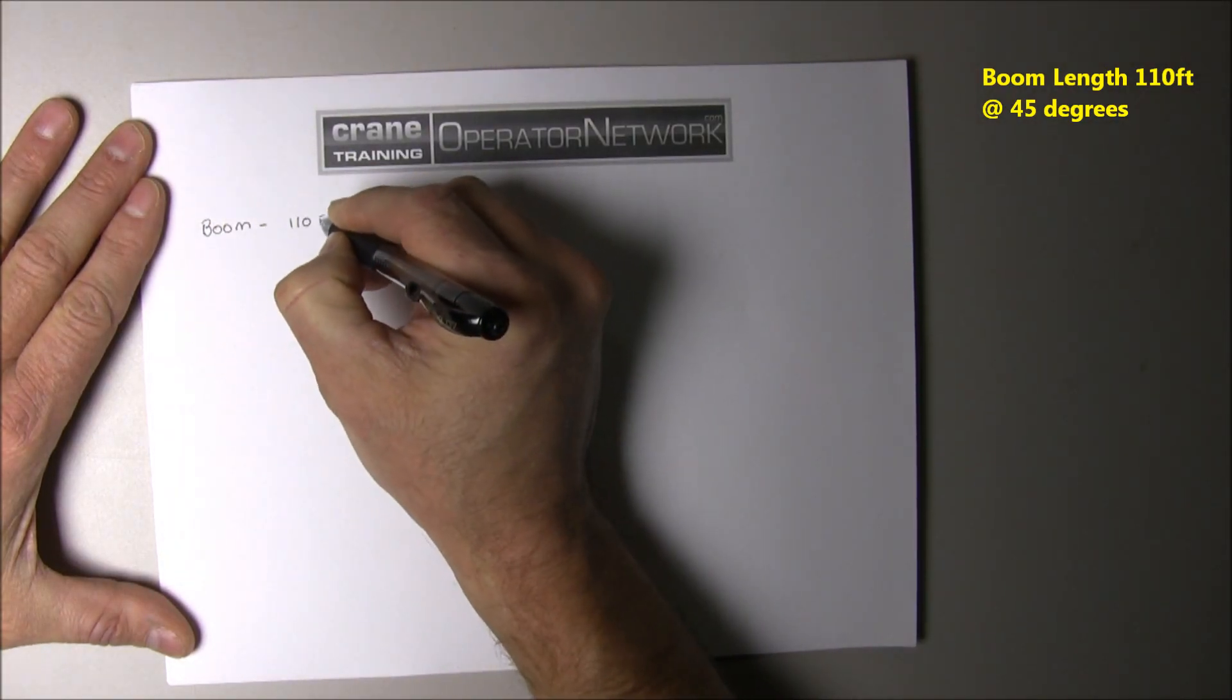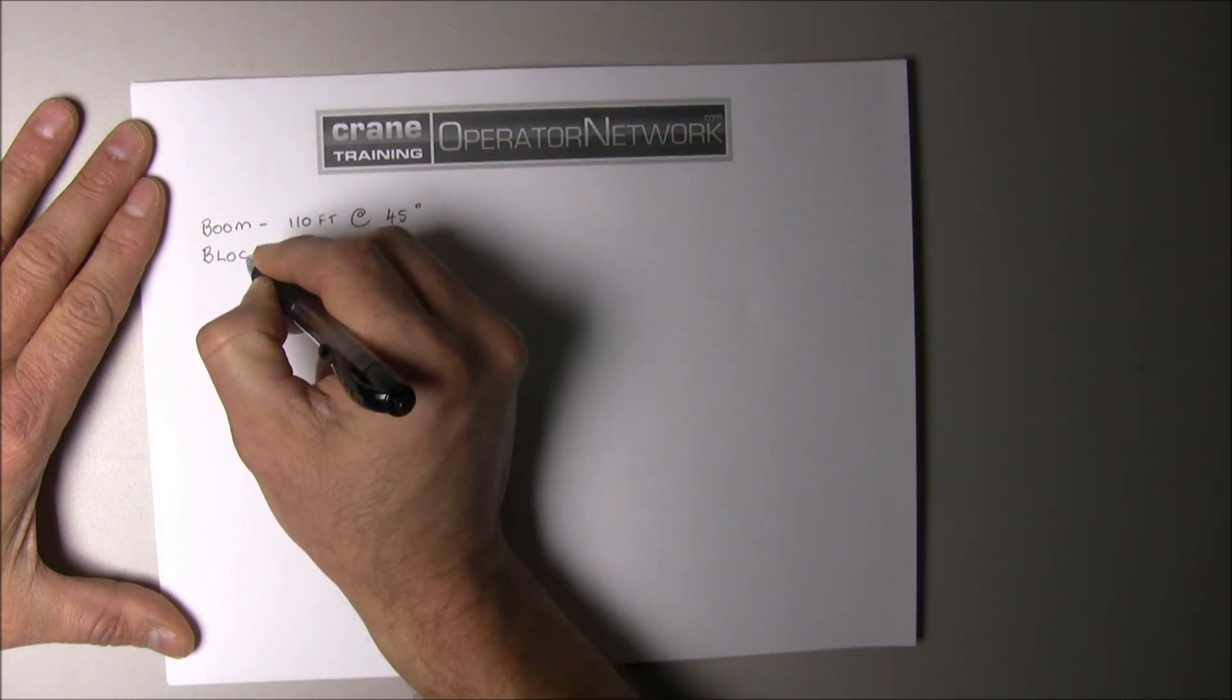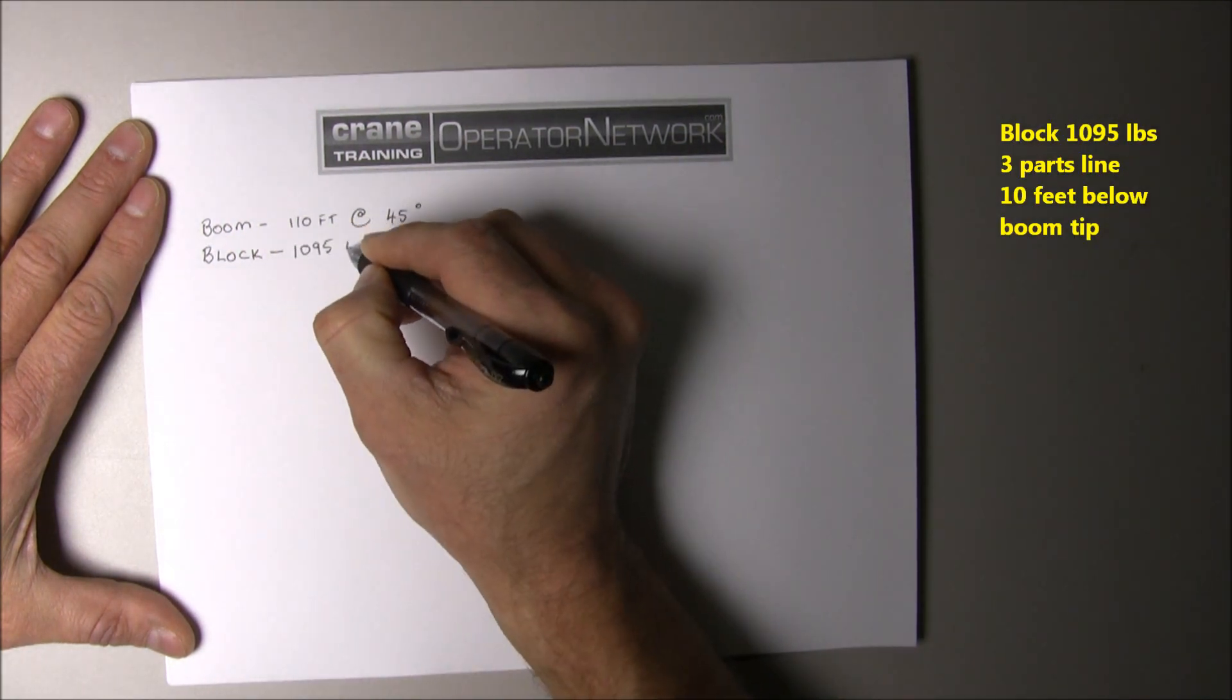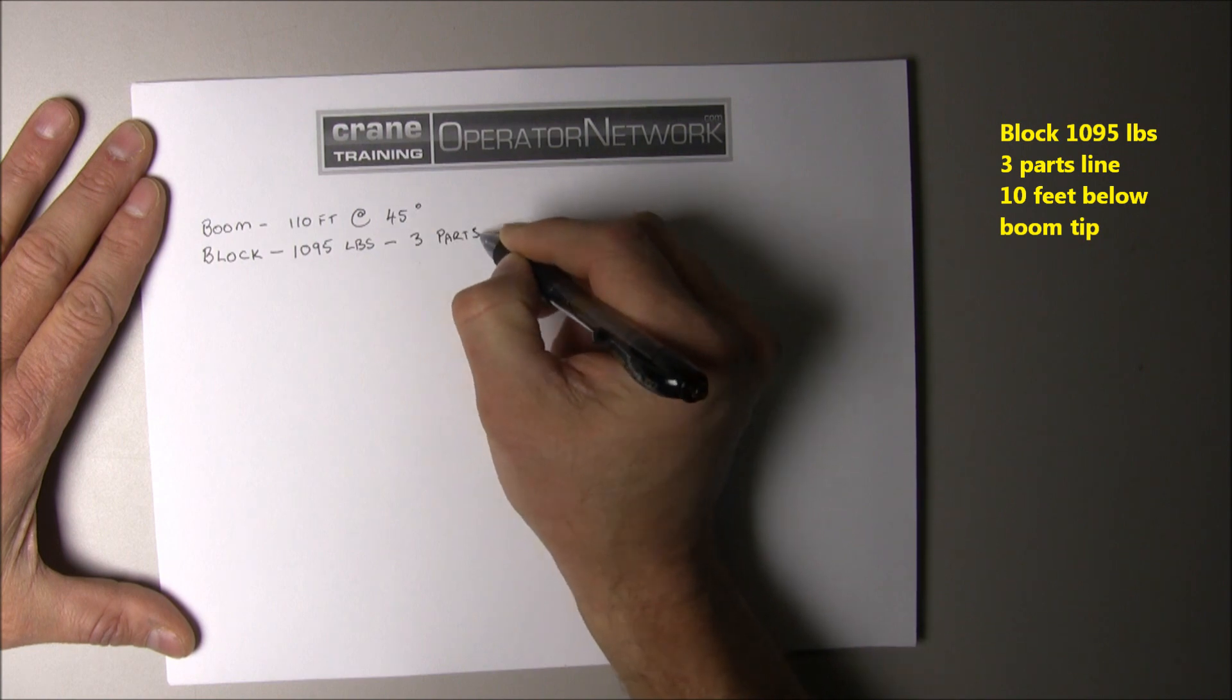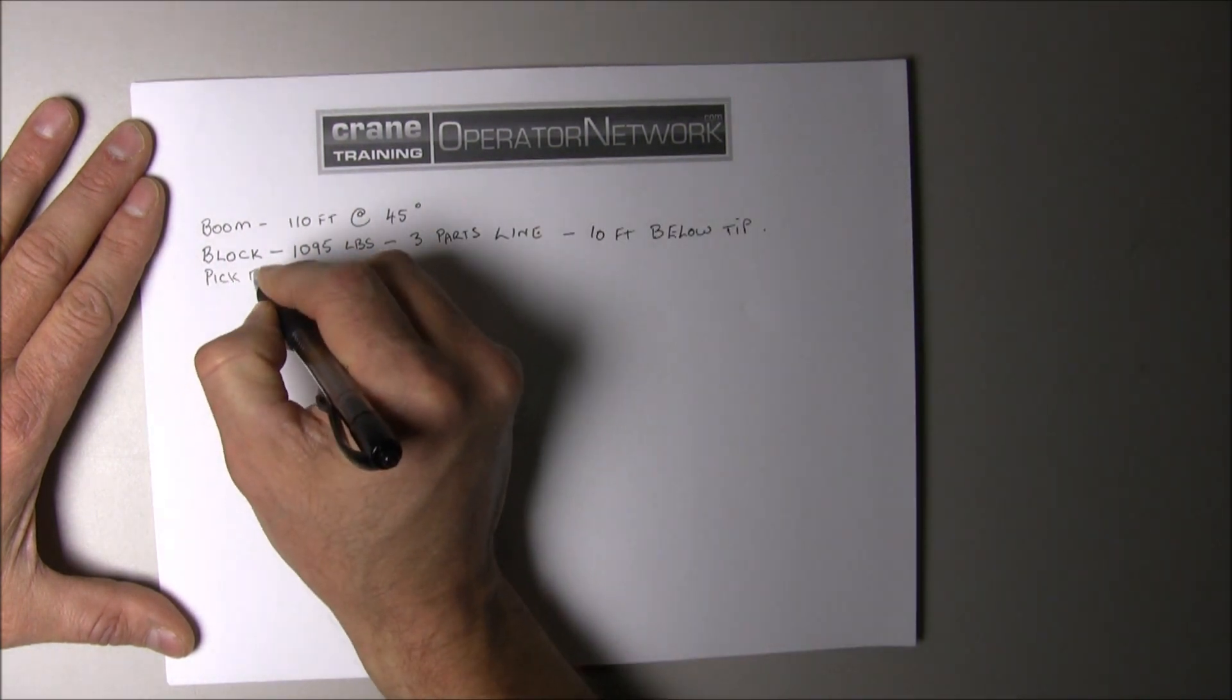Here we have a boom length of 110 feet at 45 degrees. The block has three parts of line and is 1095 pounds suspended 10 foot below the tip.